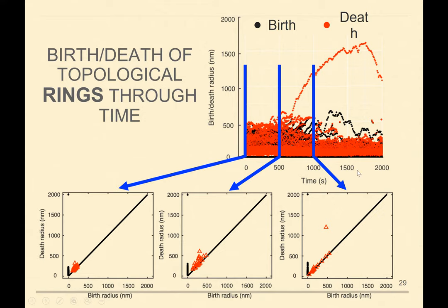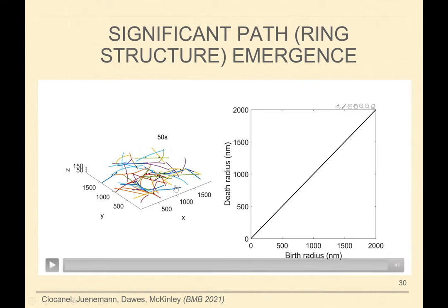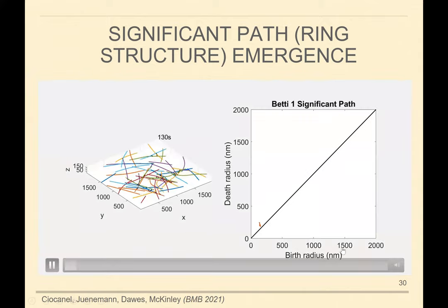We represent birth radii of all features as black circles and death radii as red circles. At time equals zero, I have a certain actin-myosin organization, extract the point cloud, compute persistent homology, and get the persistence diagram. I do that at every time point. What's striking and motivated this work was a certain continuity in the emergence of some of these features — things can't really jump from one location to all the way across the diagram. There's a certain continuity to the dynamics that gets reflected in these topological features we extract.